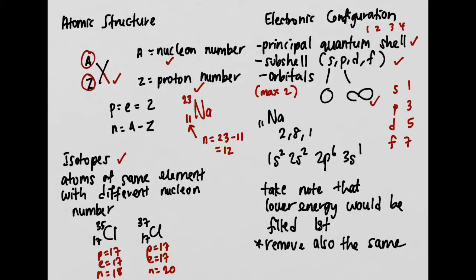This is the basics you need to know about electronic configuration. For example, if I want to write the electronic configuration for sodium — which is 2, 8, 1 — we write it in SPD form: 1s², 2s², 2p⁶, and then 3s¹.